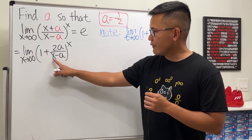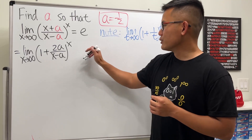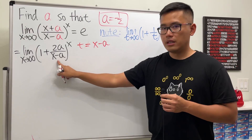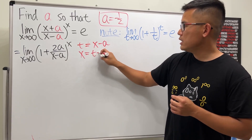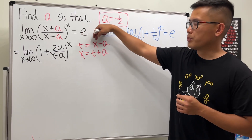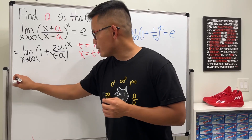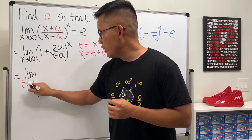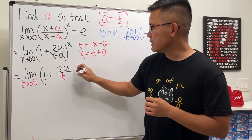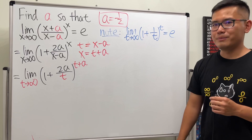Now we have two a over x minus a in the denominator, and we don't want the x minus a. So let's do a change of variable: let t equal x minus a. Then x equals t plus a. When x approaches infinity, t also approaches infinity since infinity minus a real number is still infinity. So the limit becomes: as t approaches infinity, one plus two a over t, raised to the t plus a power.